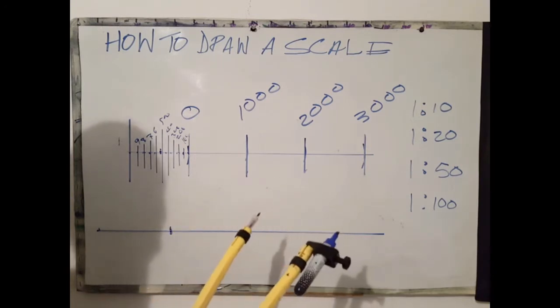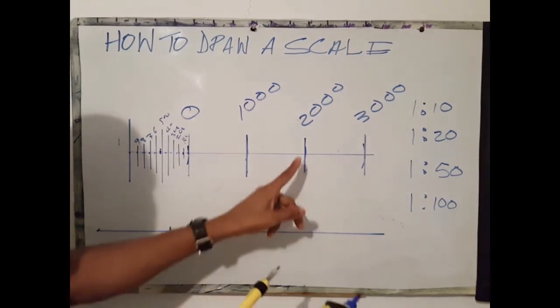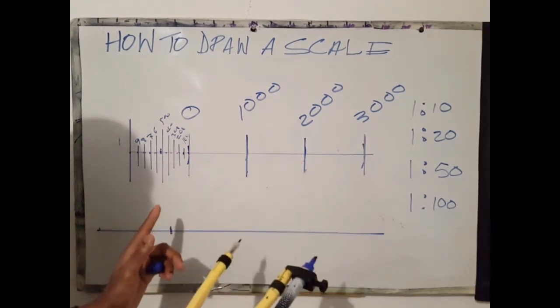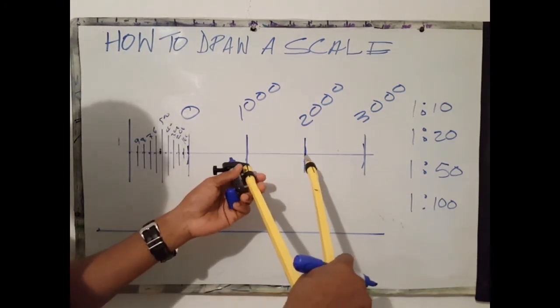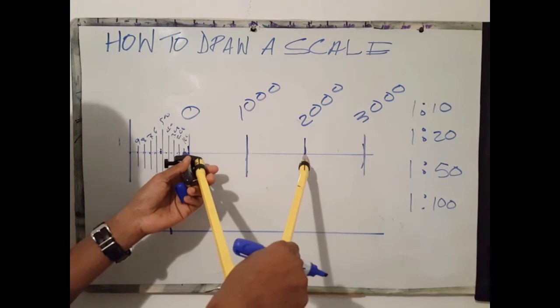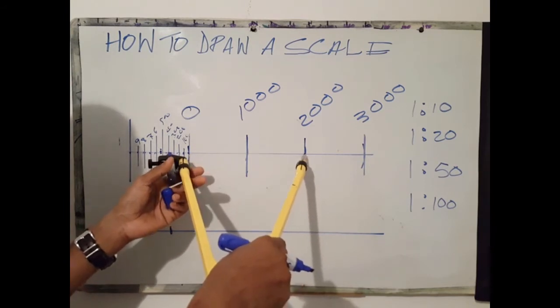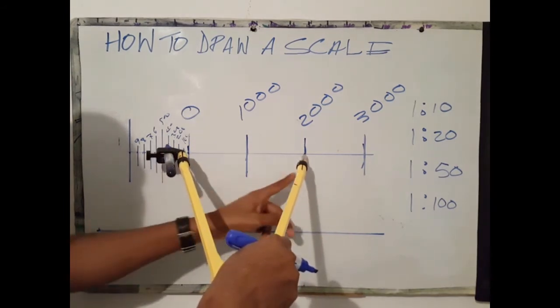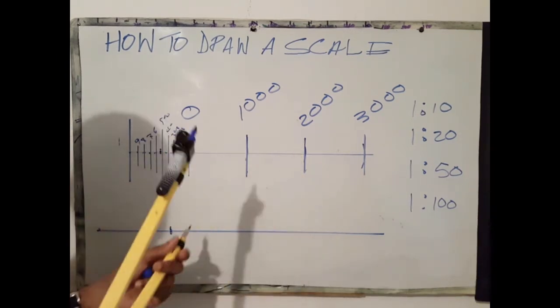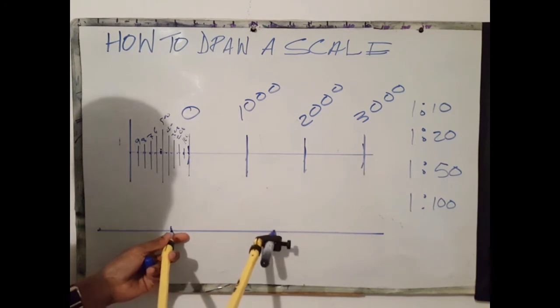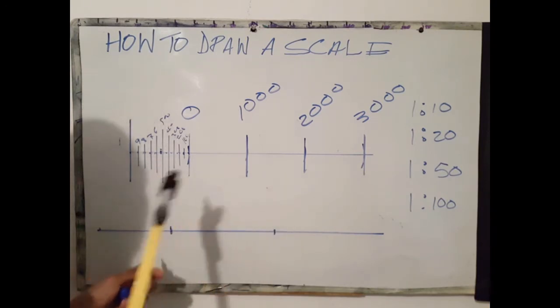Say for example we wish to transfer a distance of 2400 mm. We would put our divider at 2000, extend beyond 0 over to 400, and that would give us 2000 plus 400, which is 2400. When we transfer this to our drawing.